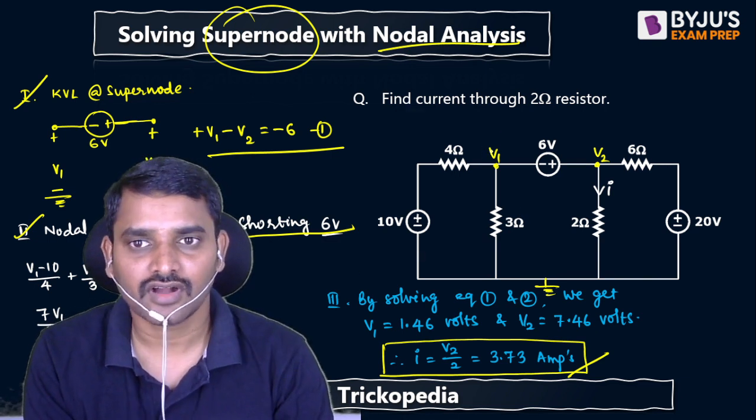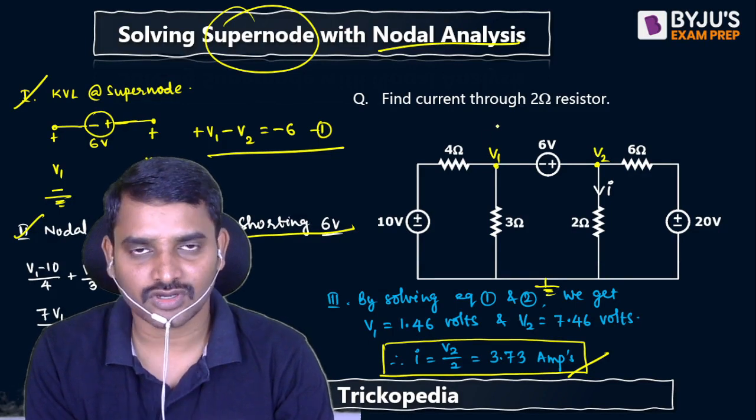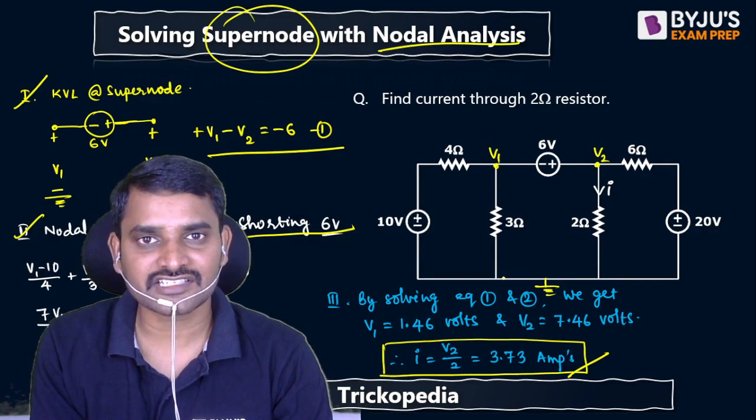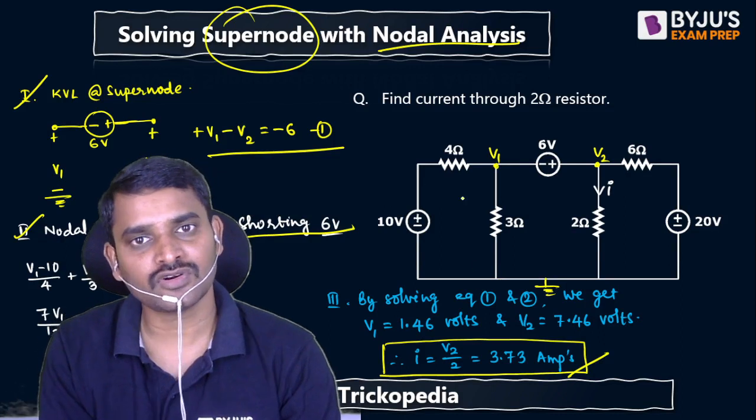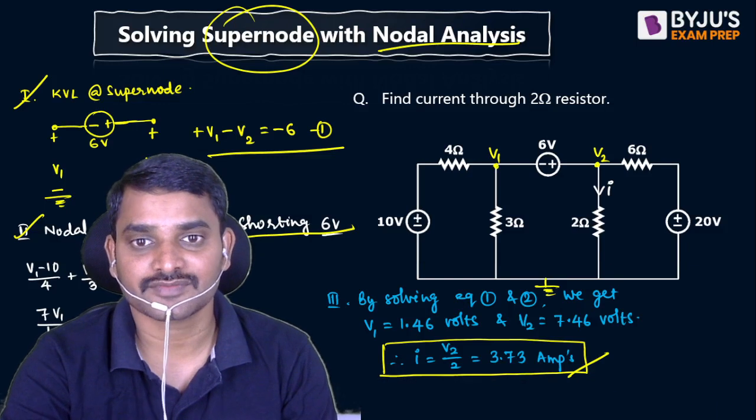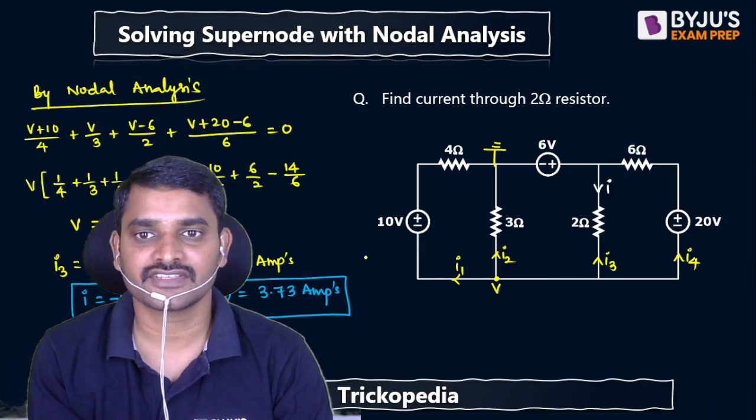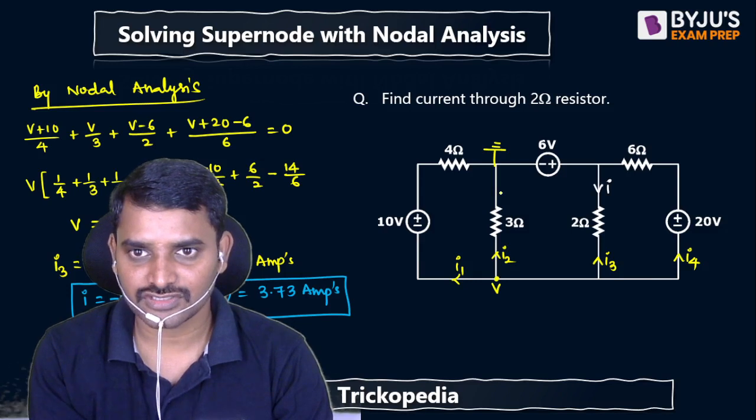Or you can assume the ground at this point also. So assume the ground at the top and select this node voltage as v and write nodal equation, so you will get the answer. So simple! No need to do three steps - in one step we can finish it. See here, I assume this as ground.